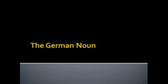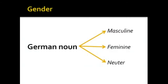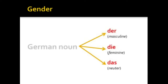A few moments to get to know the German noun a bit better. A German noun has gender — it's either masculine, feminine, or neuter. As we'll see in a few moments, the gender of a German noun isn't necessarily the same as the gender of the object in reality. The gender of a noun is indicated by the definite article. For instance, a masculine noun will be preceded by 'der', a feminine noun by 'die', and a neuter noun by 'das'.